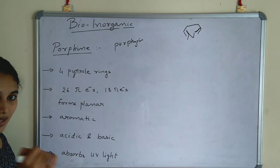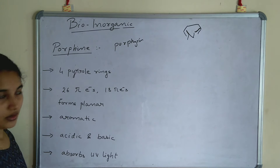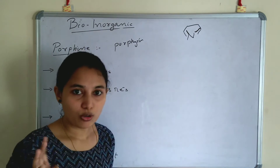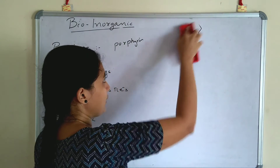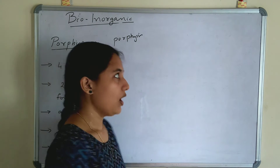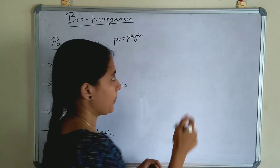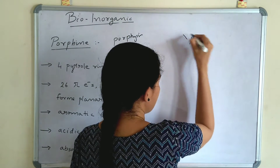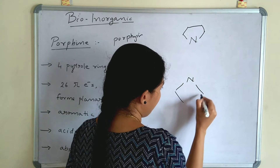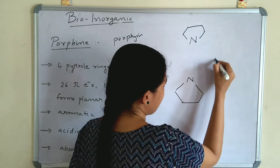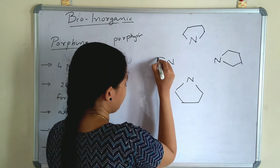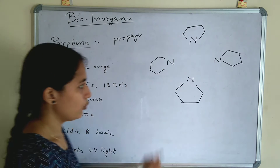The total 26 pi electrons are present. Porphyrin can also act as both acidic and basic, and it absorbs UV light. Now, moving on to the structure of porphine — we consider four pyrrole rings. These four pyrrole rings are interlinked by alpha carbon atoms via a methane bridge. Let's draw the four pyrrole rings: here, here, here, and here — so four pyrrole rings.